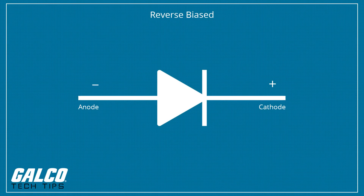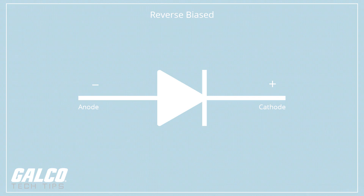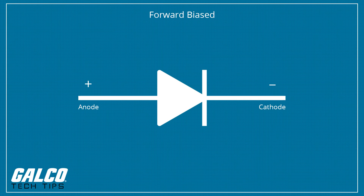In reverse blocking mode, voltage is applied in the direction that would be blocked by a diode. In forward blocking mode, voltage is applied in the direction that would cause a diode to conduct, but the thyristor has not been triggered into conduction.